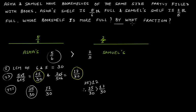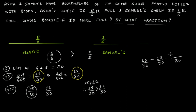The second part of the question asks: by what fraction does Asha's bookshelf have more books than Samuel's? We already have two like fractions — 25/30 and 12/30 — representing Asha's and Samuel's shelves respectively. We simply subtract 12/30 from 25/30. Since they are like fractions, the denominator stays 30 and we get 25 minus 12, which gives us 13/30. This fraction tells us by how much Asha's bookshelf has more books than Samuel's bookshelf.